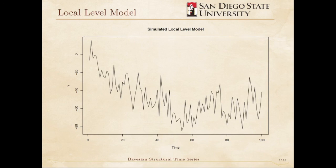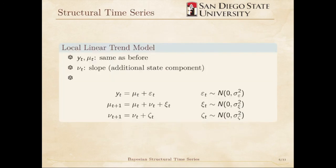The simplest way to extend the local level model is to include a trend component along with the level component. This is called the local linear trend model. Here, we consider YT and MuT to be the same as in the local level model. We add an additional term, NuT, that acts like a slope term. The model looks like this.